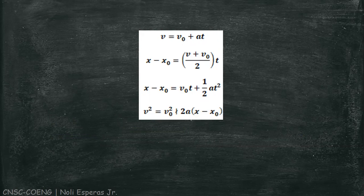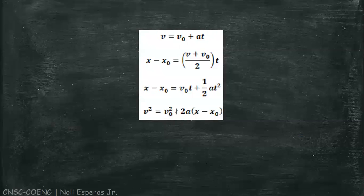These four motion equations are used to describe the motion of an object traveling with a constant acceleration along a straight line.